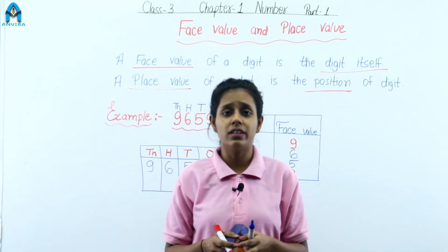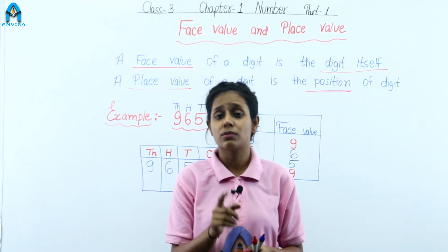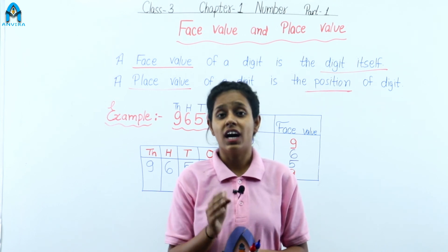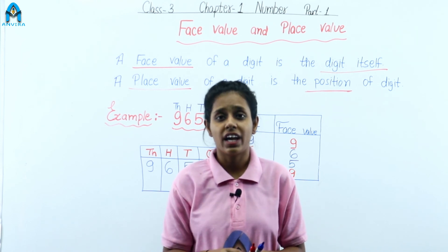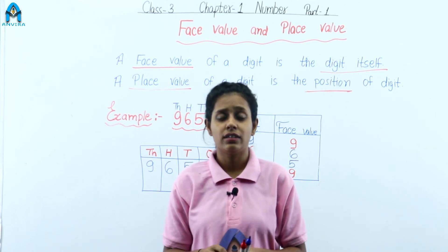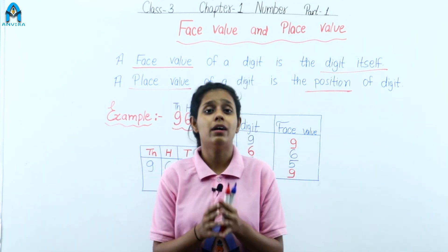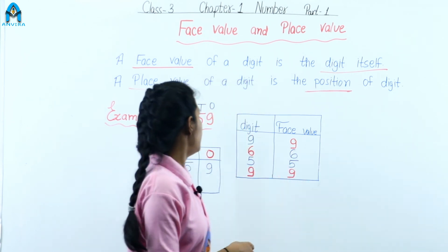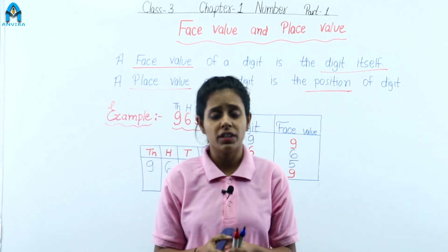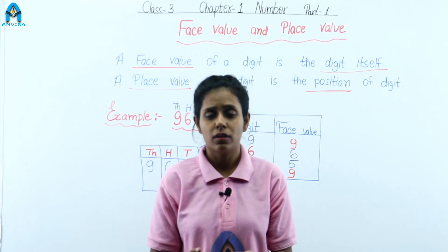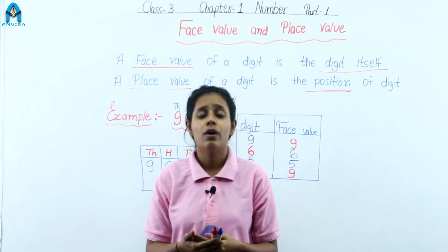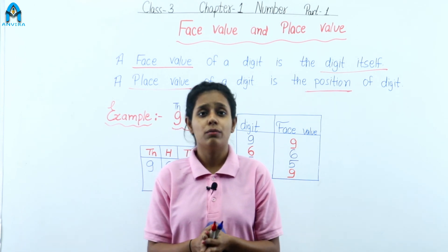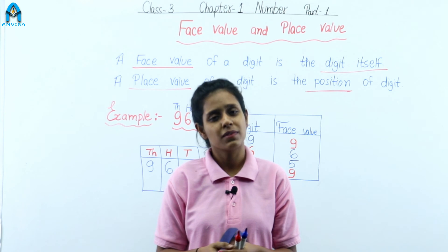So this is face value and place value. What did we learn? We learned about four-digit numbers. The smallest four-digit number is one thousand and the largest four-digit number is nine thousand nine hundred ninety-nine. We also learned how to write the number name for four-digit numbers and learned about face value and place value. All these topics we learned previously with three-digit numbers, and now we have learned them with four-digit numbers. In our upcoming class, we will learn many more things with four-digit numbers. Thank you.